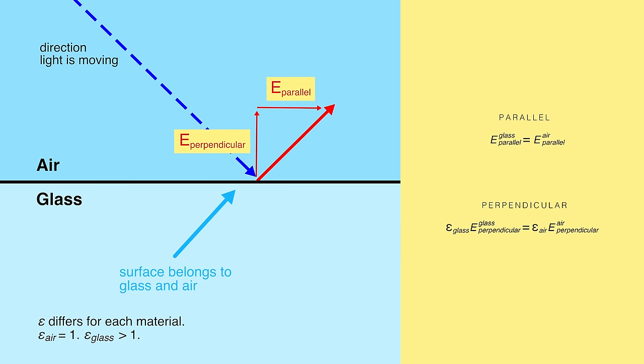And with that little bit of calculus, you can find two important restrictions. The first is that the electric field parallel to the surface of the glass has to be the same in the air and the glass. And similarly, perpendicular to the surface, what has to be the same is the electric field times this epsilon, which is different for each material and depends on its molecular makeup.